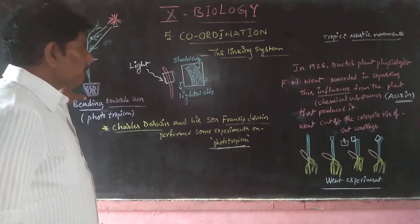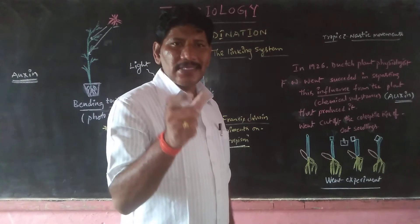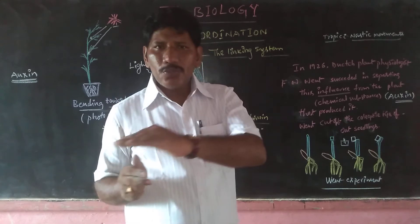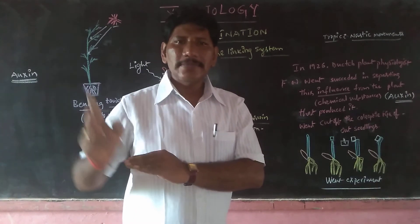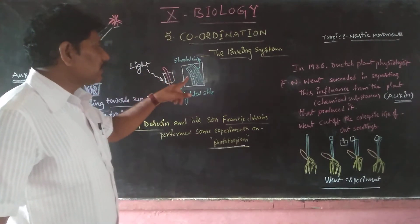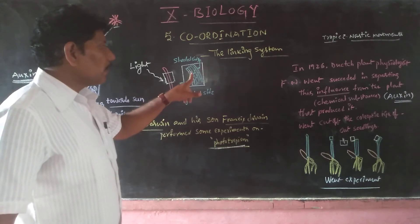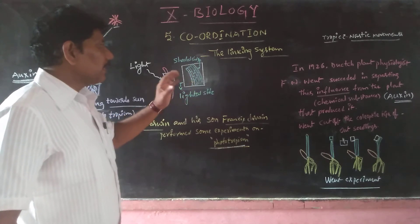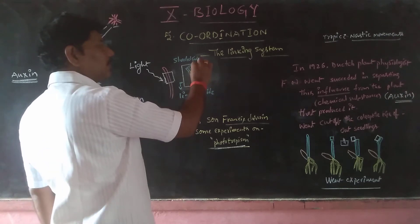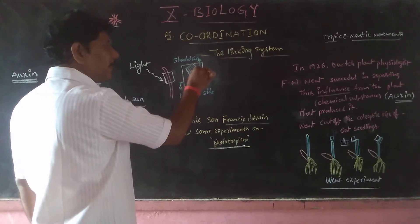For example, when a potted plant is kept near a window in our house, the plant bends towards the sunlight — it bends through the window toward the external side. Why does this happen? Because the external stimulus, light, when it falls on the stem portion, causes cell stimulation — that is, cell division. Due to cell elongation and differentiation, more cell division takes place. Because of more cell growth on the lighted side than the shaded side, the bending occurs.